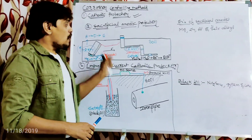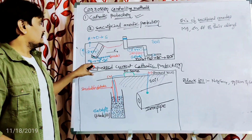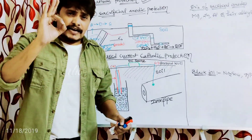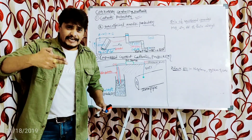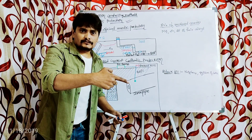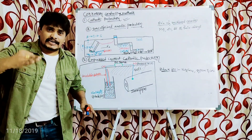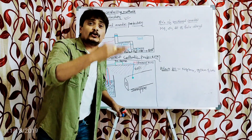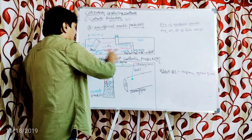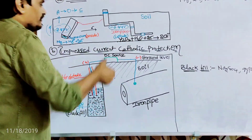Now, coming to the next cathodic protection method — impressed current cathodic protection — which explains how we can convert an anodic metal into a cathodic metal. In impressed current cathodic protection, a direct current is sent in the opposite direction to the corrosion current in order to nullify it. Let us now discuss the setup required for carrying out impressed current cathodic protection.